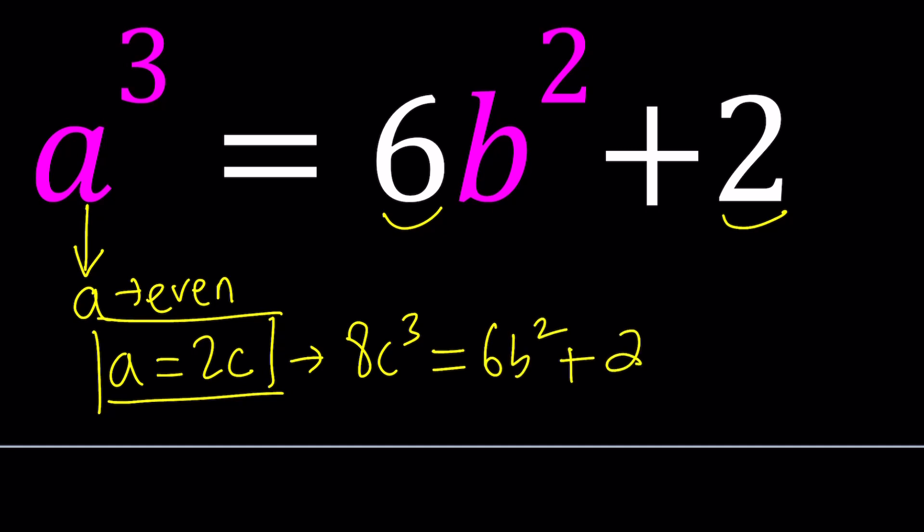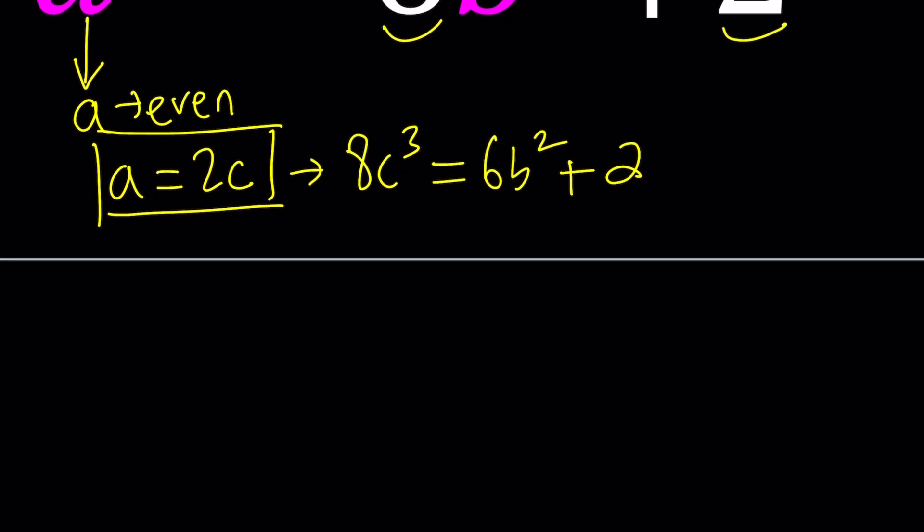You can divide both sides by 2. That's what's cool about these equations. 4c³ = 3b² + 1. Awesome.